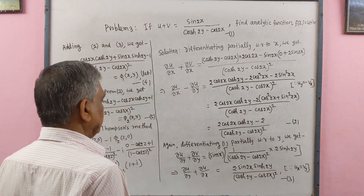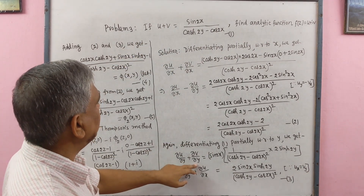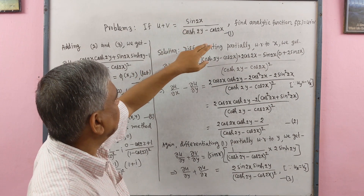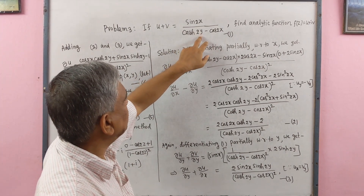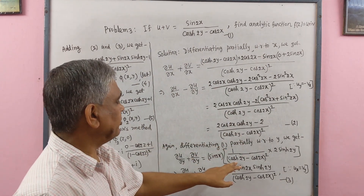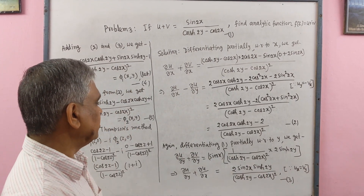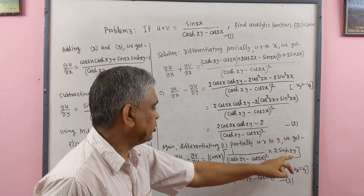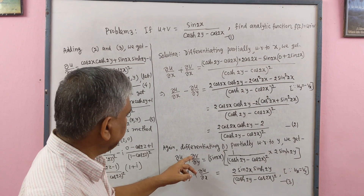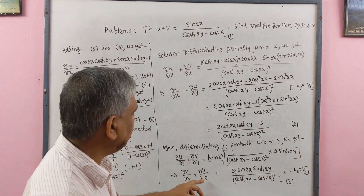Differentiating equation 1 partially with respect to y: ∂u/∂y + ∂v/∂y = sin 2x · (2sinh 2y) / (cosh 2y − cos 2x)², giving ∂u/∂y + ∂v/∂y = 2sin 2x·sinh 2y / (cosh 2y − cos 2x)². Since u_x = v_y by Cauchy-Riemann, we replace ∂v/∂y with ∂u/∂x. This is equation number 3.